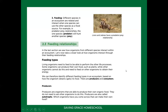The third interaction is feeding. This is when different species in an ecosystem interact because one species can use the other as a food source — simply put, one species eats the other. This is normally called your predator-prey relationship, where the predator eats the prey.